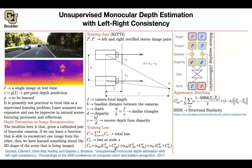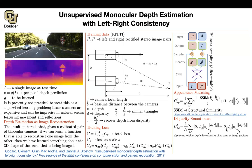You also want the disparities coming out of the neural network to be smooth — this is a regularization term penalizing first derivatives in the x and y directions. However, you don't want to enforce smoothness at edges, so you remove the penalty using an exponential edge-aware weighting: whenever the image gradient is high indicating an edge, don't penalize. This applies for both left and right disparities, giving you the full smoothness regularization terms.